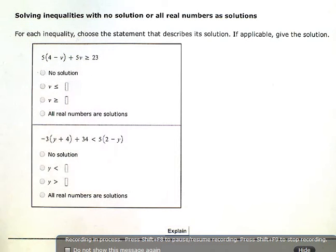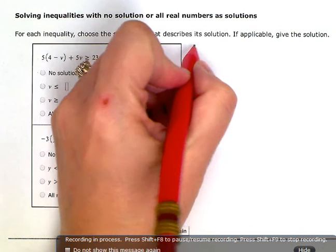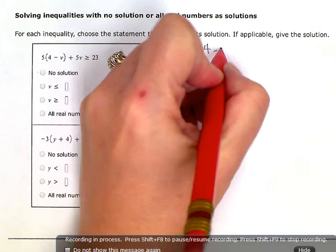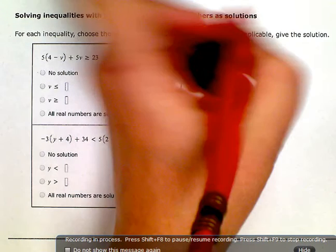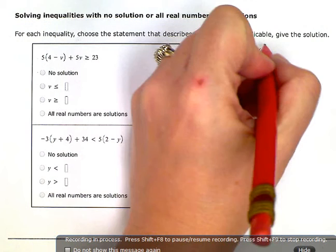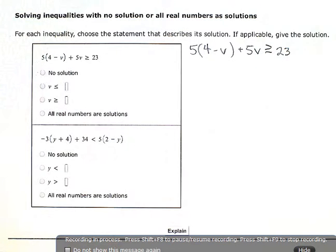I'm going to rewrite the inequality. So 5 times the quantity 4 minus v, plus 5v, is greater than or equal to 23. And then I'm just going to start to solve it, just like I would any inequality.